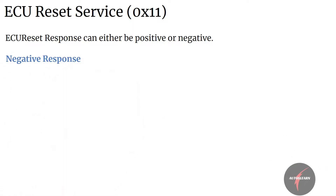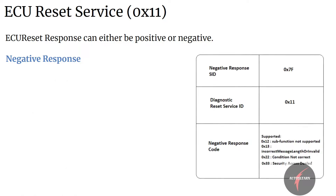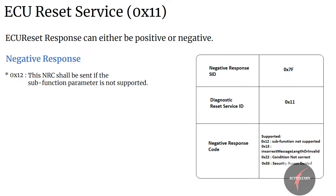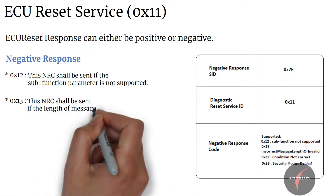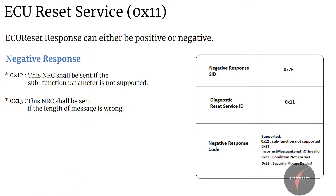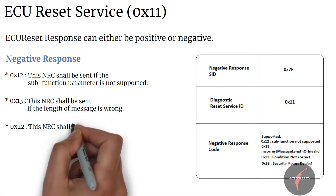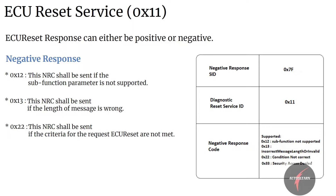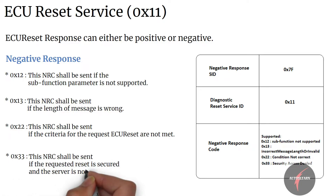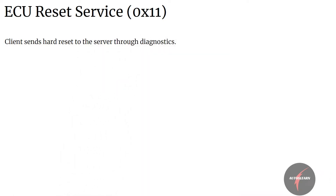Let's now look into the negative response. Some typical negative responses for ECU Reset are: NRC 12 — sub-function not supported, sent if the sub-function parameter is not supported; NRC 13 — incorrect message length or invalid format, sent if the message length is wrong; NRC 22 — conditions not correct, sent if the criteria for the ECU Reset request are not met; and NRC 33 — security access denied, sent if the requested reset is secured and the server is not in an unlocked state.